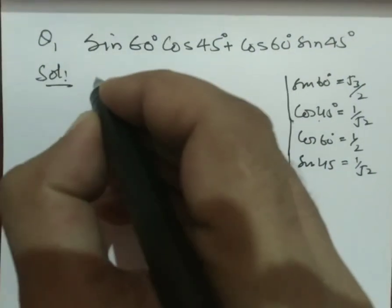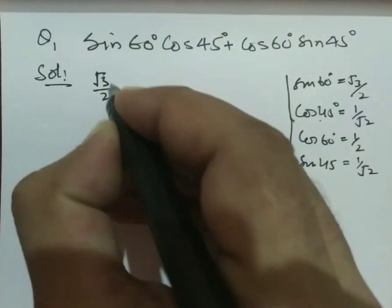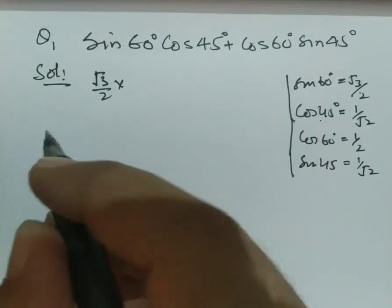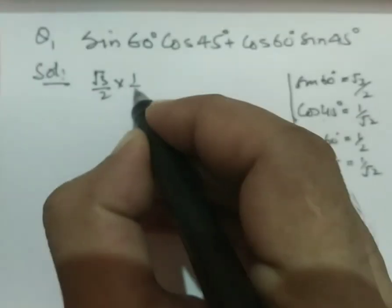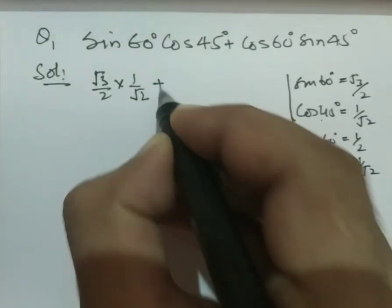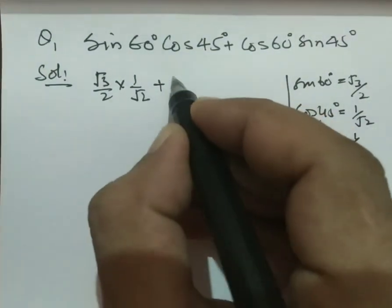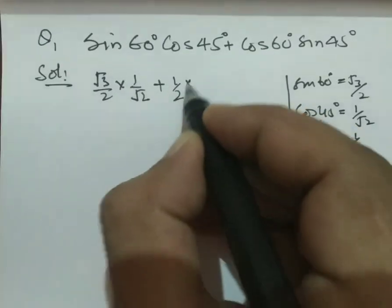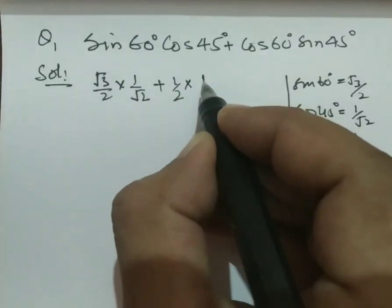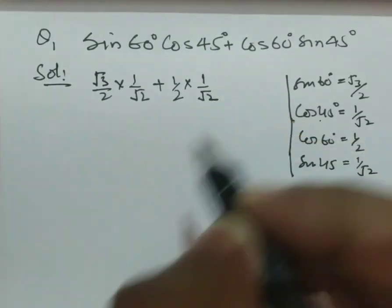So sin 60 is root 3 over 2 times cos 45 is 1 over root 2, then plus cos 60 is 1 over 2 times sin 45 is 1 over root 2.